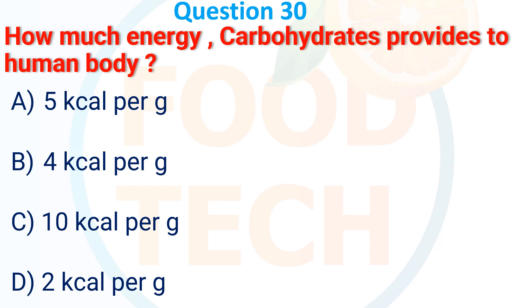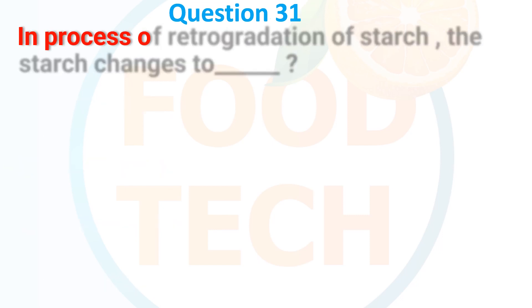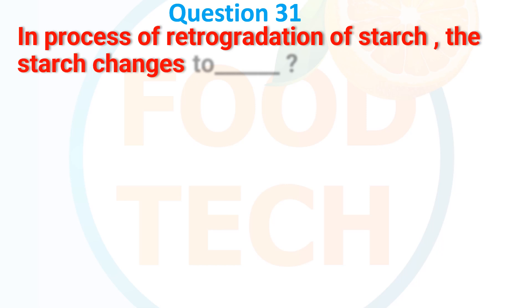Question 30: How much energy do carbohydrates provide to the human body? A. 5 kcal, B. 4 kcal, C. 10 kcal, D. 2 kcal. The answer is B. 4 kcal.